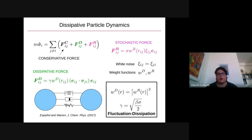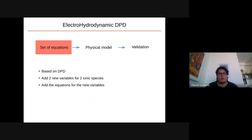What we did was start from the dissipative particle dynamics model and add new variables representing the ionic species in solution, along with equations for the dynamics of these new variables. Specifically, in this new framework, each mesoparticle has a position, a velocity, and also a quantity of cations and anions carried in the mesoparticle. The equations for the dynamics of the two additional variables have a dissipative term and a stochastic term. The stochastic term is proportional to a white noise process, and the dissipative terms are proportional to the difference of chemical potential between the mesoparticles.